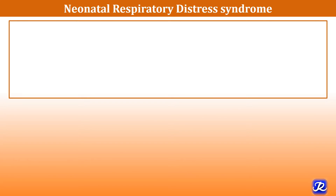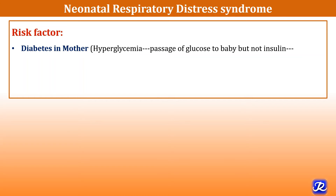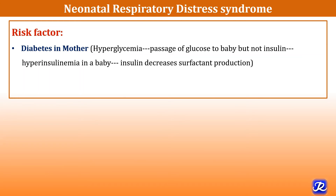What are the risk factors for neonatal respiratory distress syndrome? The most important risk factor is diabetes in the mother. If the mother has diabetes, there is hyperglycemia and passage of glucose to the baby, but insulin cannot cross the placenta. Exposure of glucose to the baby leads to increased activation of beta cells of the pancreas, which release insulin, causing hyperinsulinemia in the baby. Insulin decreases surfactant production, and that is why babies born to diabetic mothers are more prone to neonatal RDS.